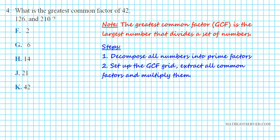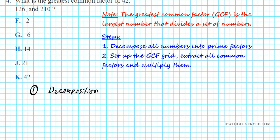Let's take a look at number 4: what is the greatest common factor of 42, 126, and 210? The GCF is the largest number that divides a set of numbers without any remainder. We're going to decompose all three numbers into their prime factors, then set up a GCF grid to extract common factors and multiply them. Only prime factors are allowable in this decomposition.